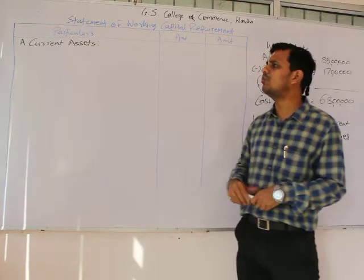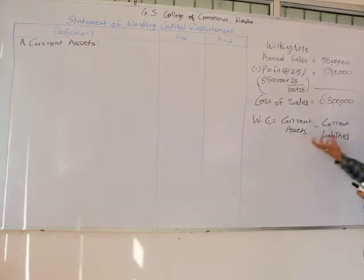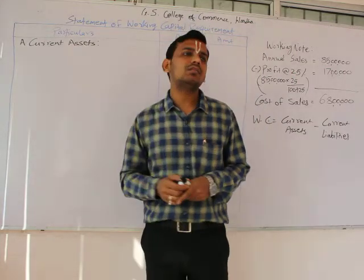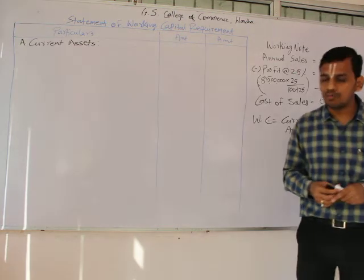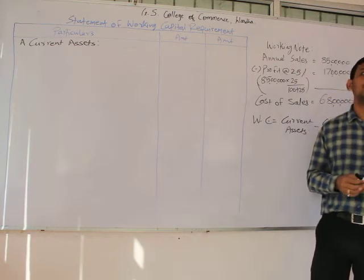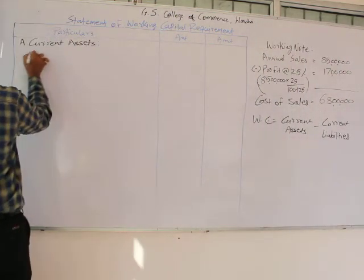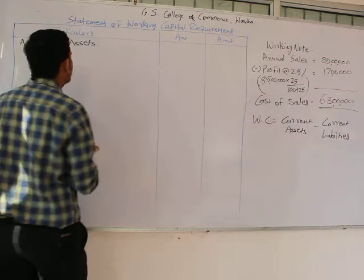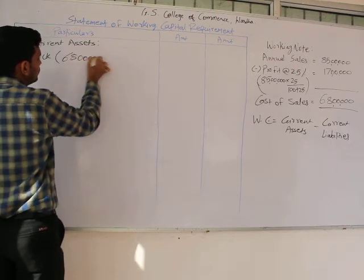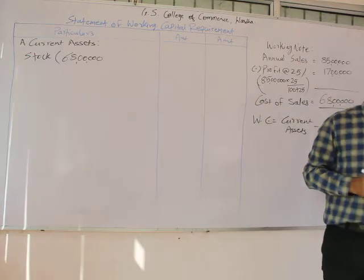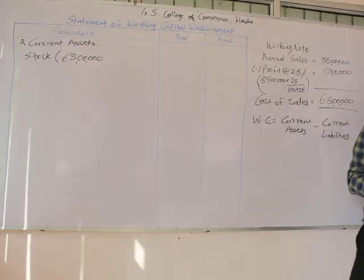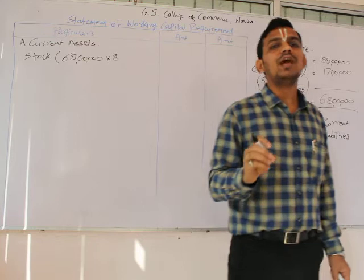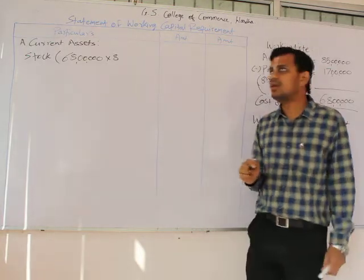We have to deduct current liabilities from our current assets. We will start with current assets. As there is no information provided with regard to stock of raw material or work-in-progress, we will directly jump to the stock portion. For the valuation of stock, we would take the cost of sales amount of 68 lakhs. The question says that stock would remain with us for 8 weeks, so we would multiply by 8. As the count is given in weeks, we must use weeks for calculation.